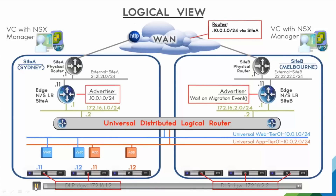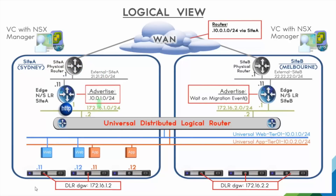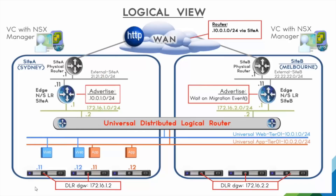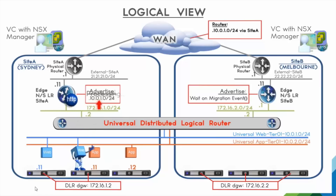Packets coming in will arrive via site A because it's the slash 24. The packets will get to the NSX edge, then to the UDLR, then to the VM. The packets will also arrive for all the other VMs on that same tier. For example, the dot 12 VM — the packets will arrive there and the default gateway locality will ensure it goes back to the respective path.